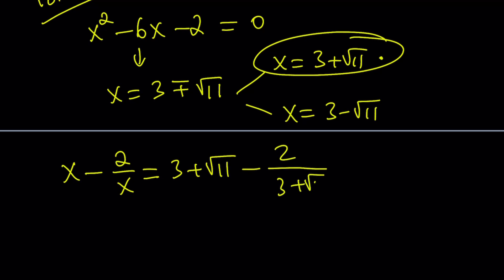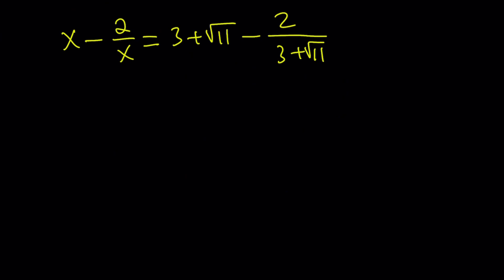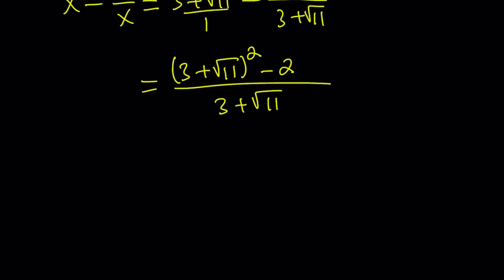You can rationalize the denominator, but let's go ahead and make a common denominator. Put a 1 underneath. Multiply 3 plus root 11 by 3 plus root 11, which gives you 3 plus root 11 squared minus 2 divided by the common denominator. So that is the value we're trying to evaluate.